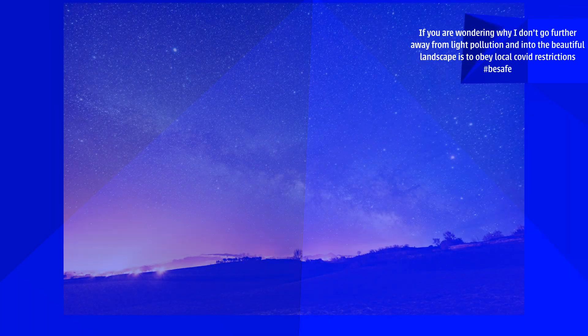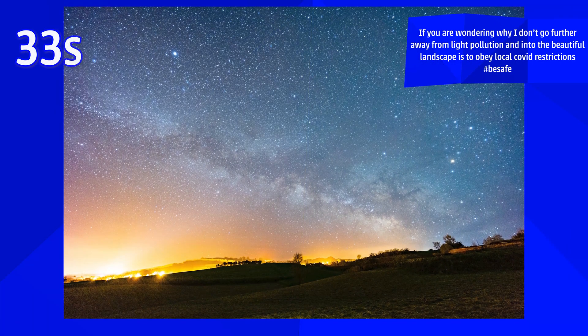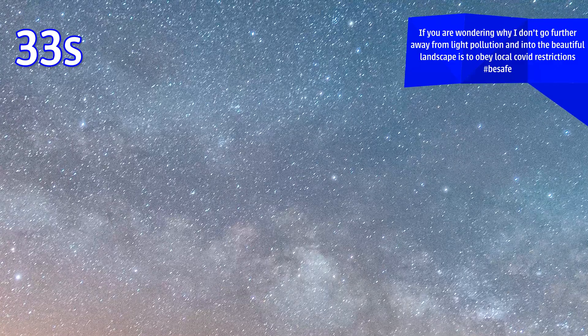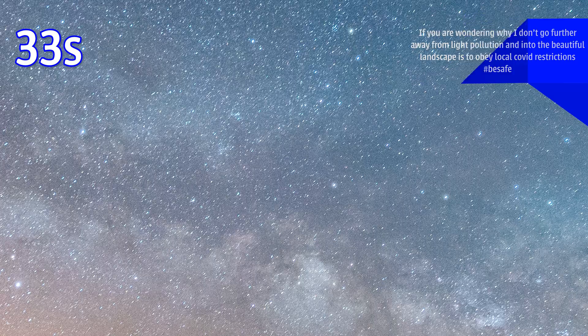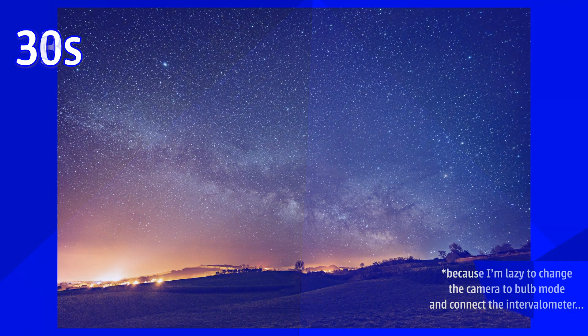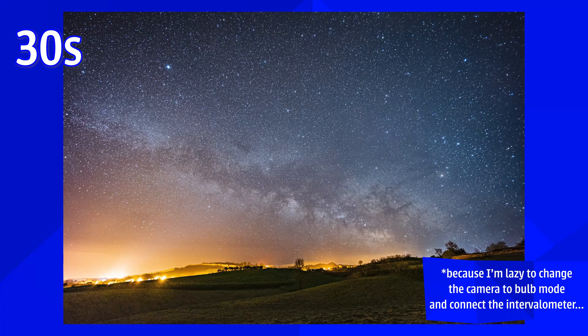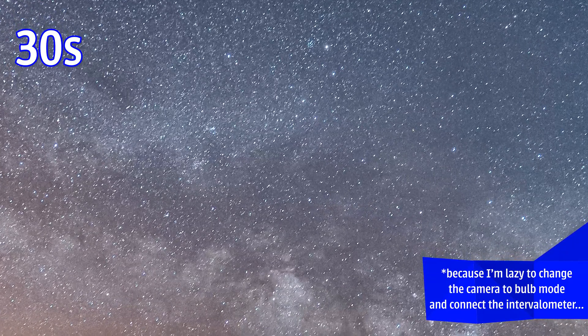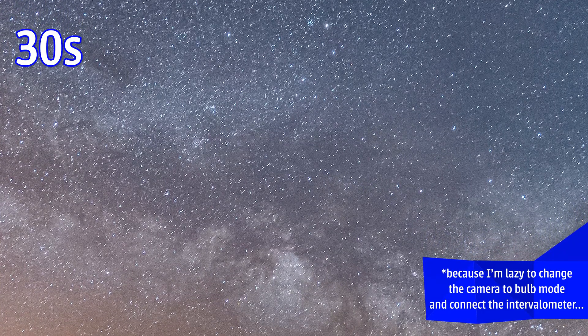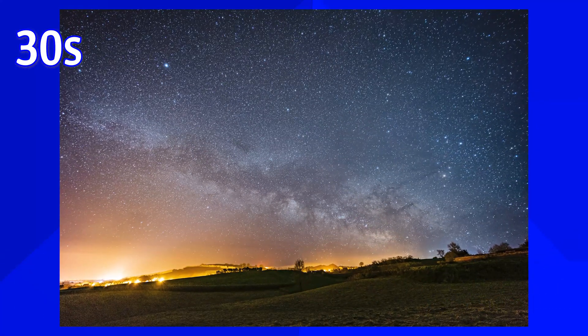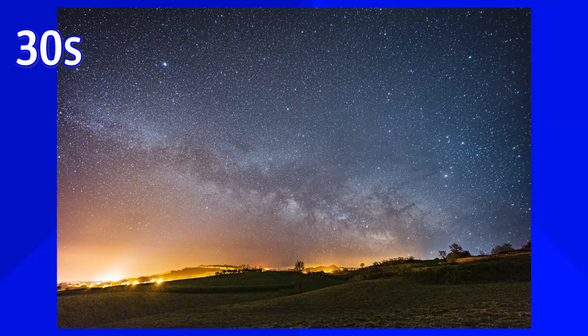Following the 500 rule, I have 33 seconds to photograph the Milky Way. However, even respecting the 500 rule, there is some star trailing visible. I reduced the shutter speed — most of my shots are 30 seconds — but even then it has some trailing. You could use this for social media no problem, but for printing I'm a bit more demanding.